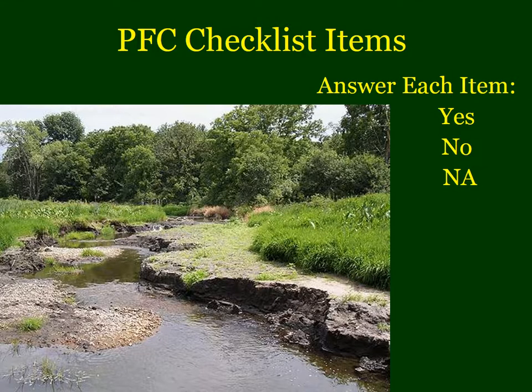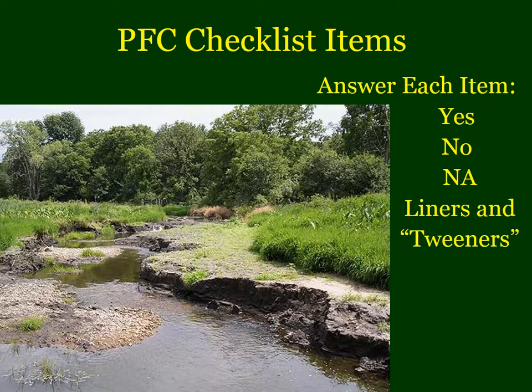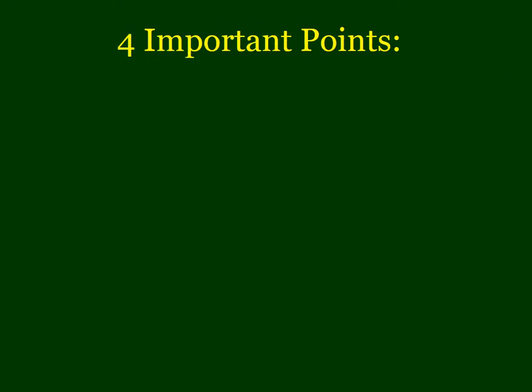On the PFC checklist, the team goes through walking, studying, evaluating, and observing up and down the creek, trying to answer each question with yes, no, or not applicable. If the team cannot come to an agreement, you can mark it as a liner or tweener — somewhere between yes and no, or a really weak yes. Making notes of why you answer each item the way you did is important.